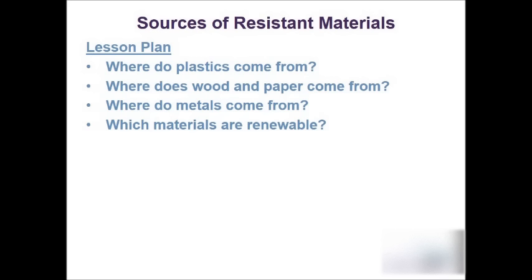So firstly, where do plastics come from? The majority of plastics, as you will know, often come from oil. Now there are a few plastics — things like plastics produced from cornstarch or acetate, which comes from a cellulose source, which is plant-based.